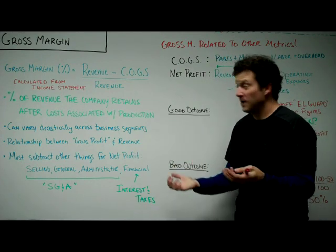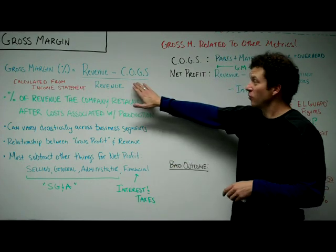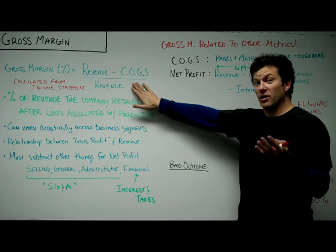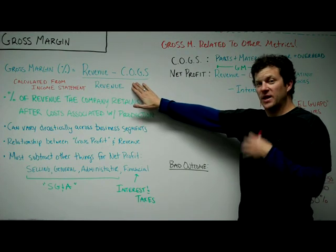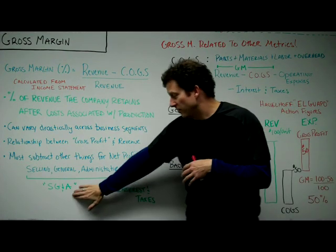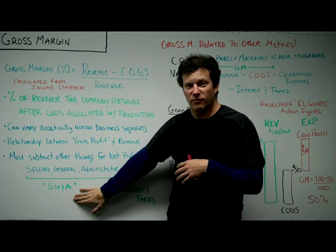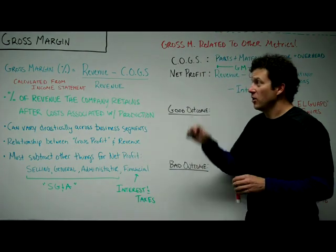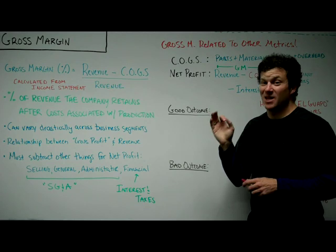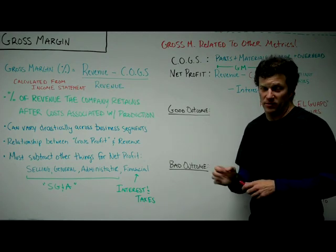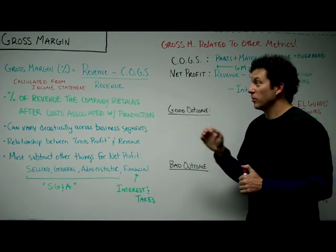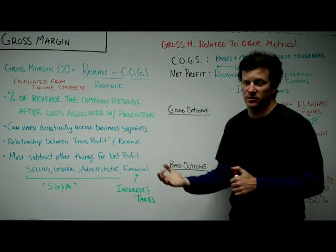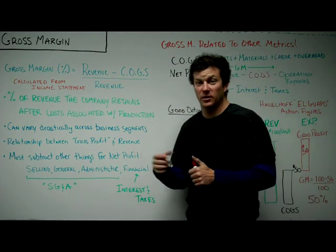There's no money left at the end of the day if, even with a 60% gross margin — meaning for every $100 you're retaining $60 — you're spending $75 on those other expenses, then you're losing money. So that's an important thing to keep in mind: gross margin is not the same as net profit or net margin. Gross margin is exactly revenue minus cost of goods sold divided by revenue.